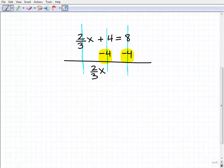Now we have a positive 4 plus a negative 4. That's 0, so that goes away. I have my equal sign and I have 8 plus a negative 4, which is simply just 4.